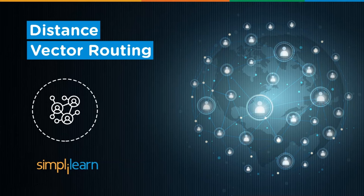Distance Vector Routing is a protocol in data networks that helps to determine the best route for data packets to travel in a network channel.